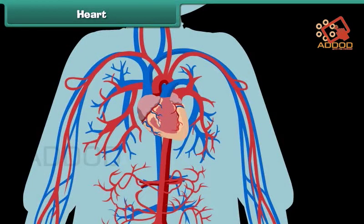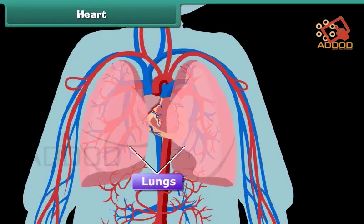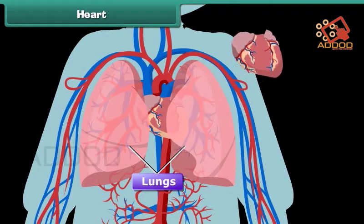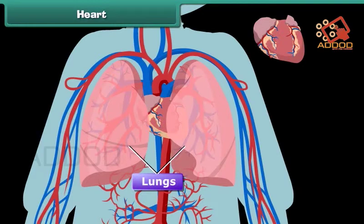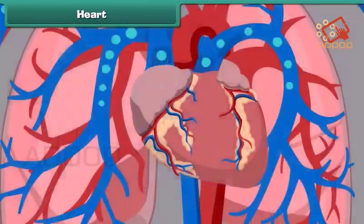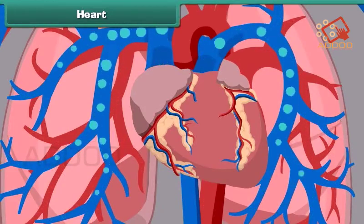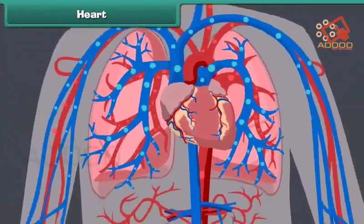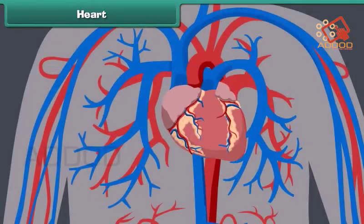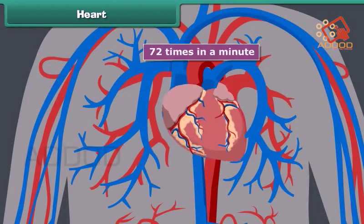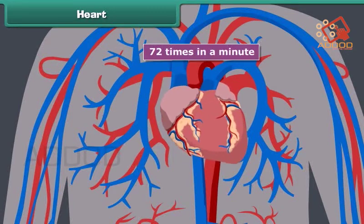Heart: the human heart is located in the chest cavity between the two lungs, a little to the left of the center of the human body. It is conical in shape, and the size of a human's clenched fist. It is a bag of muscles responsible for pumping blood filled with oxygen and other nutrients throughout the body. The human heart beats 72 times in a minute and works continuously without getting tired.